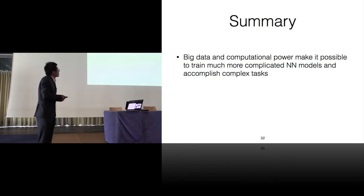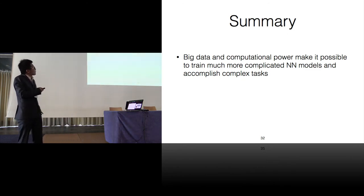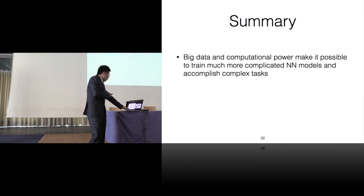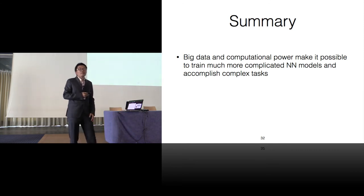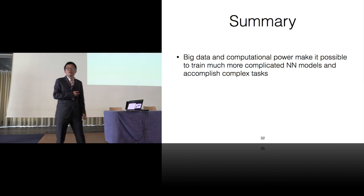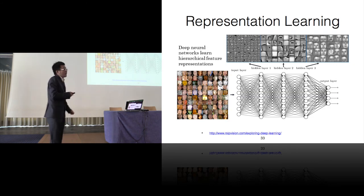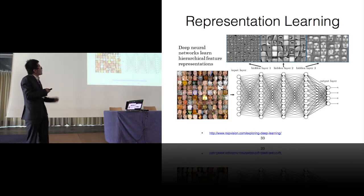So summary, big data and computational power make it possible. Before in the 80s, in the 60s this was just not possible and now it becomes possible. That's why many professors in universities they are going to the industry because they have big computational power, they are well paid of course, so they can do many cool research.